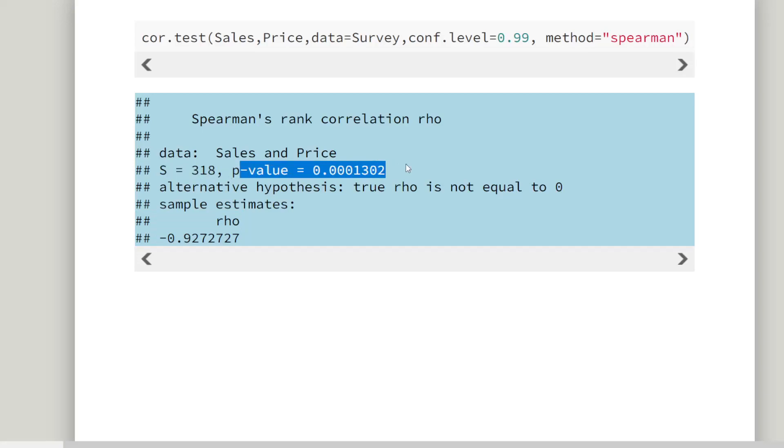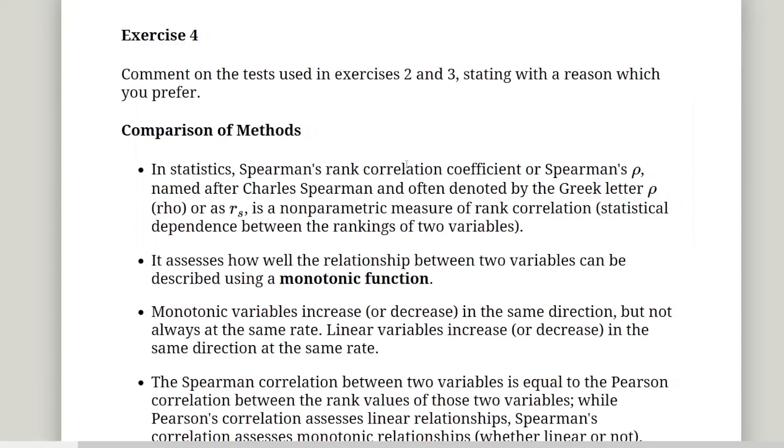But the p-value there is 0.0001302. So again, that is less than 1%. So in this case, we reject the null hypothesis. The alternative hypothesis has strong evidence to back it up. Now, that alternative hypothesis is that the true rho is not equal to 0. And that means the null hypothesis is that it is equal to 0. So comment on the tests used in exercises 2 and 3 with a reason, stating with a reason what you prefer.